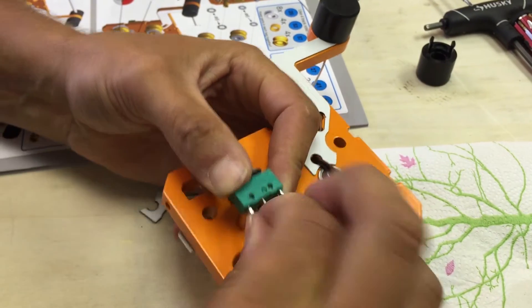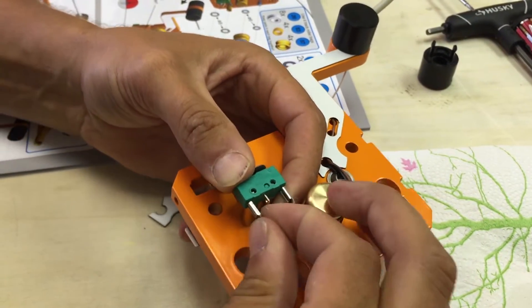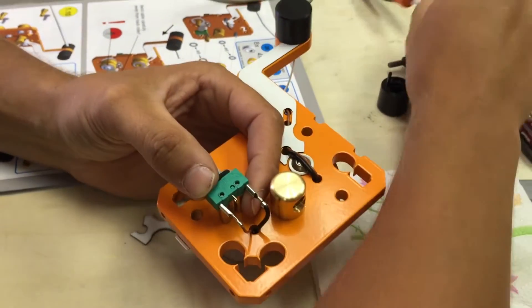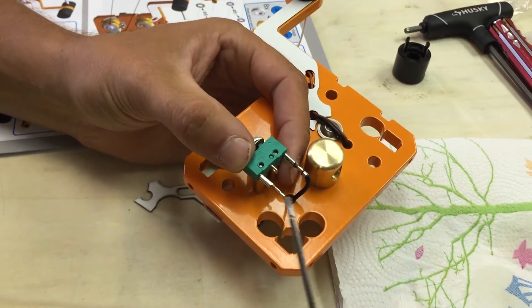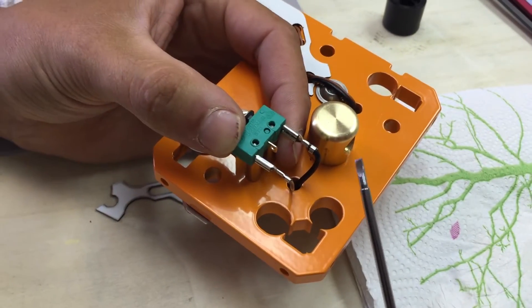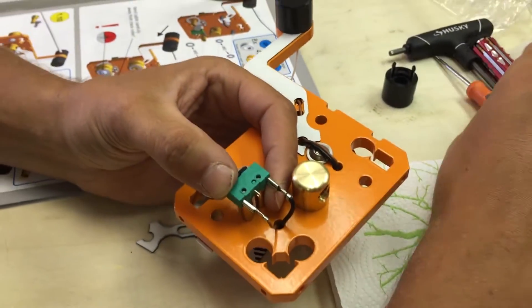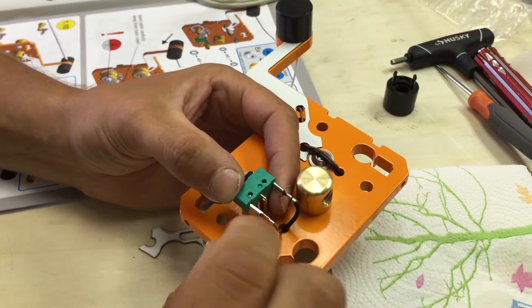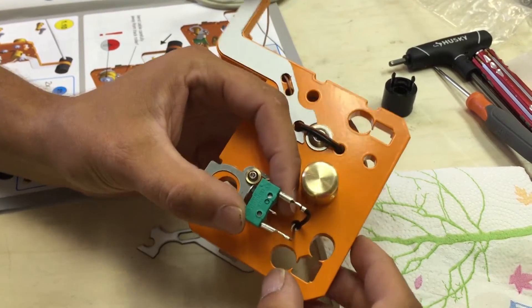Sometimes these can be a little tight, and if that's the case, you just open it up with a flat blade screwdriver a little bit. If you make it too big, you can use a small set of pliers to squeeze it back down.